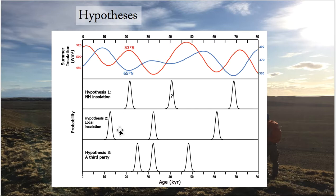Alternatively, the second hypothesis is that glaciers in Patagonia vary according to local insolation, so when the red curve is at a minimum we would see glaciers expanding here. Or the third possibility is that these glaciers care more about some other driver — we may find that the moraine distribution doesn't vary according to either insolation signal.